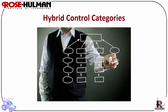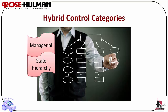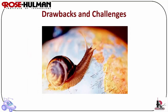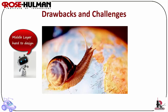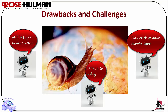Hybrid control categories include: managerial, which divides layers into a scope of control — for example, the mission planner directs the path planner; state hierarchy, which uses robot state to distinguish between reactive and deliberative activities; and model-oriented, with no clear delineation of roles where behaviors have access to the world model. Challenges of hybrid control include: the middle layer is hard to design and is very task- and robot-specific; a hybrid system can degenerate so that the planner slows the reactive system to the point where it simply ignores the planner and becomes purely reactive control; and an effective hybrid system is difficult to design and debug.